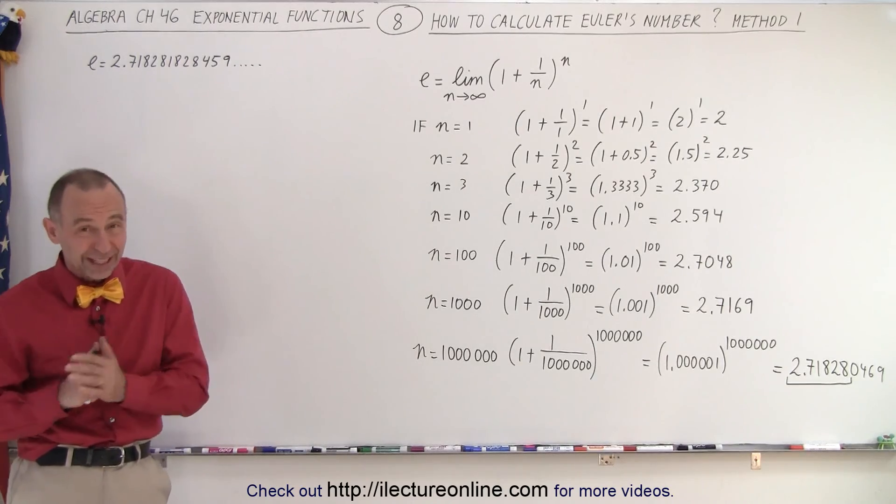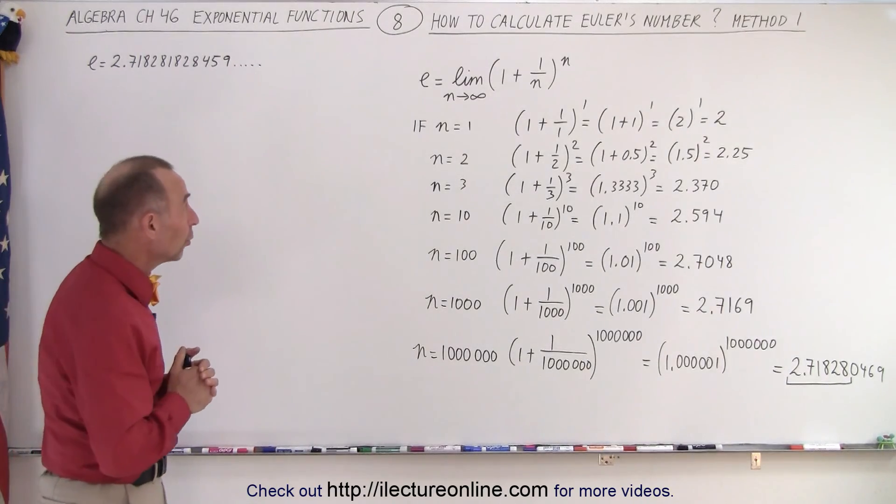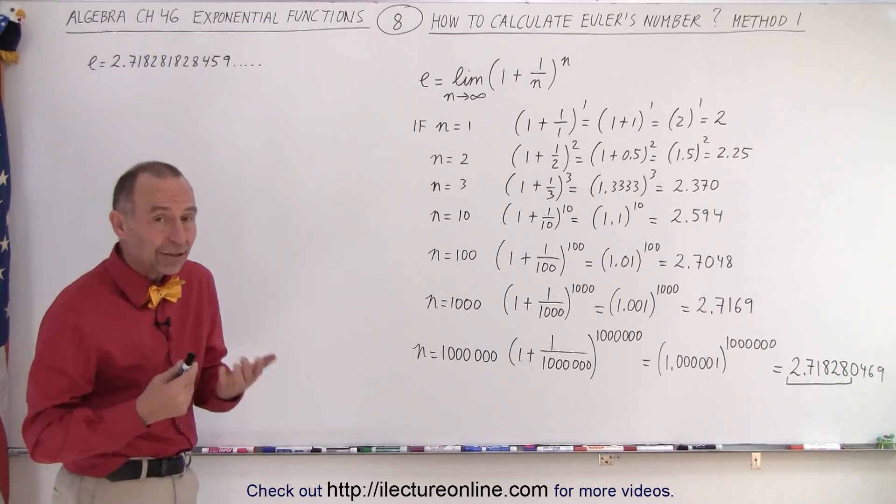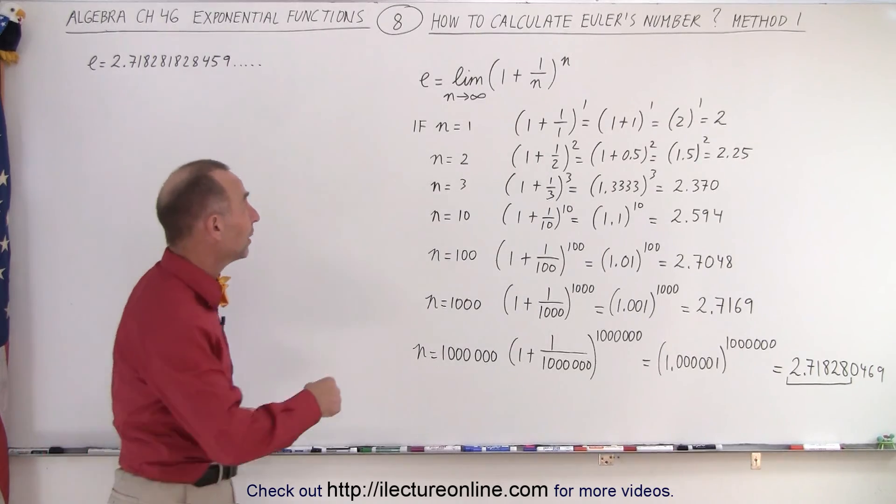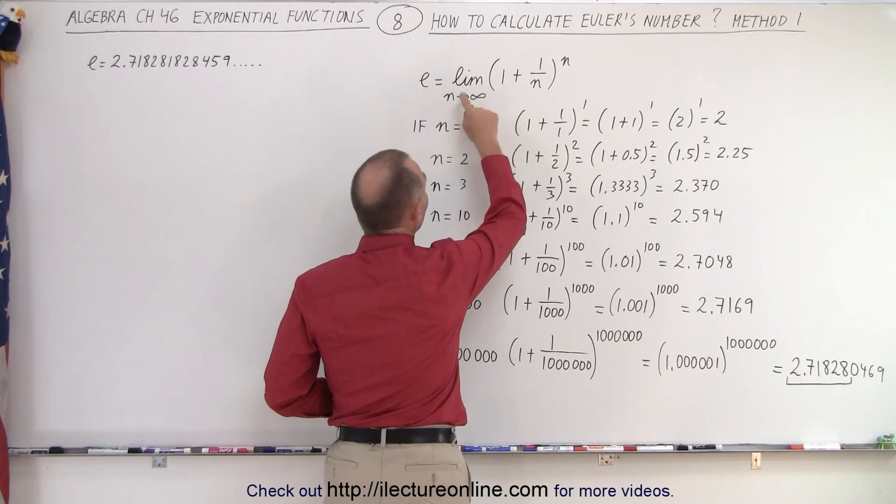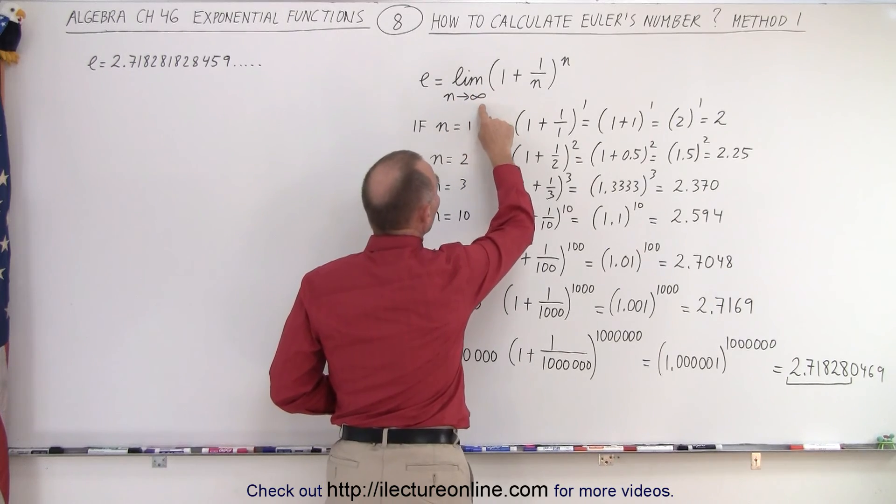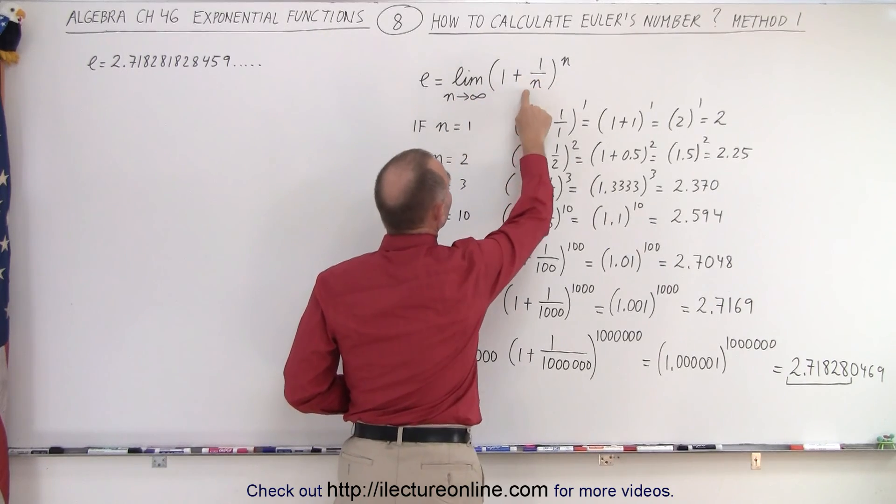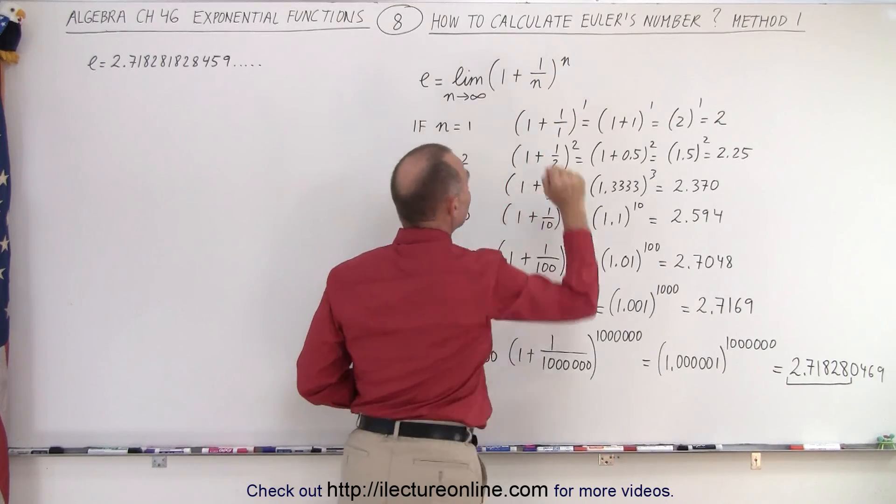On the next video, I'll show you a second method as well. So the definition of e, the natural number or Euler's number, is equal to the limit as n goes to infinity of 1 plus 1 over n, the whole thing raised to the n power.